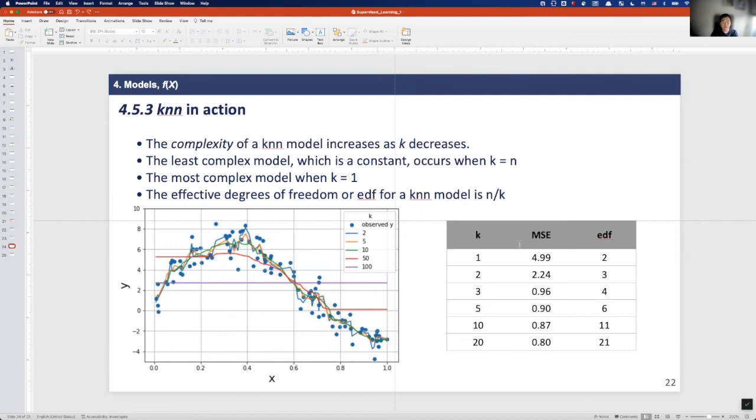You can also check the MSE value of each model, and as k increases, the MSE value decreases. Does this mean we should always use the higher k value for the KNN model? I hope you will find this answer as you learn the rest of these supervised learning lectures.